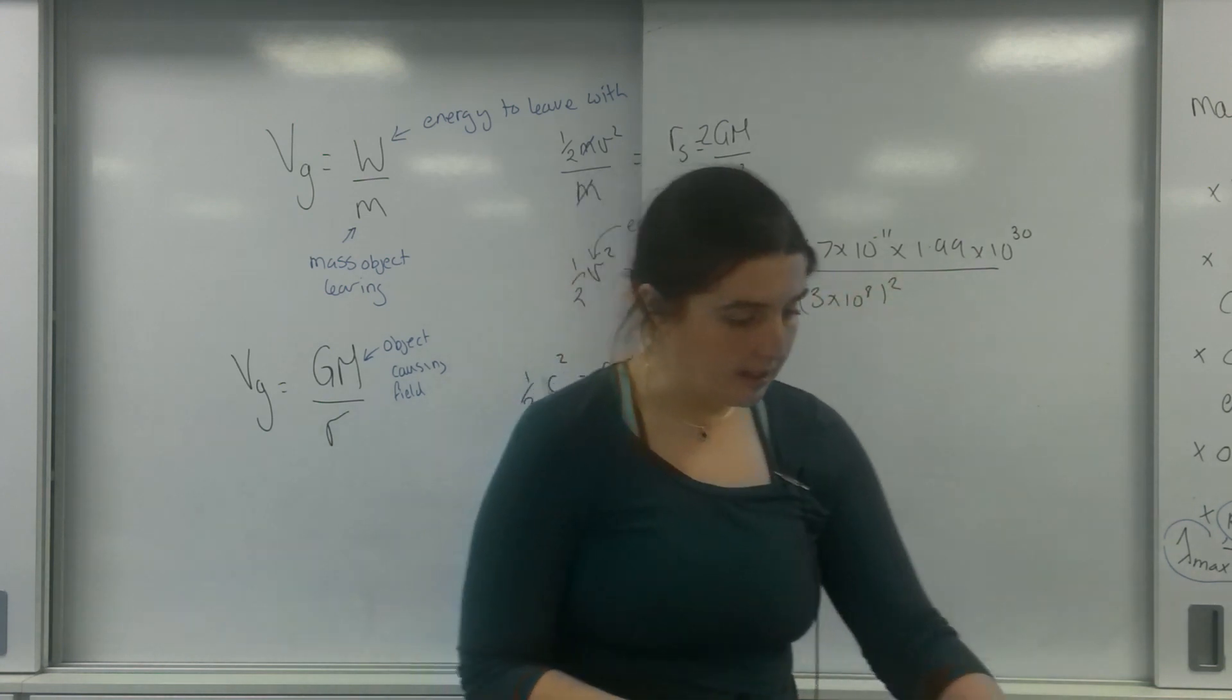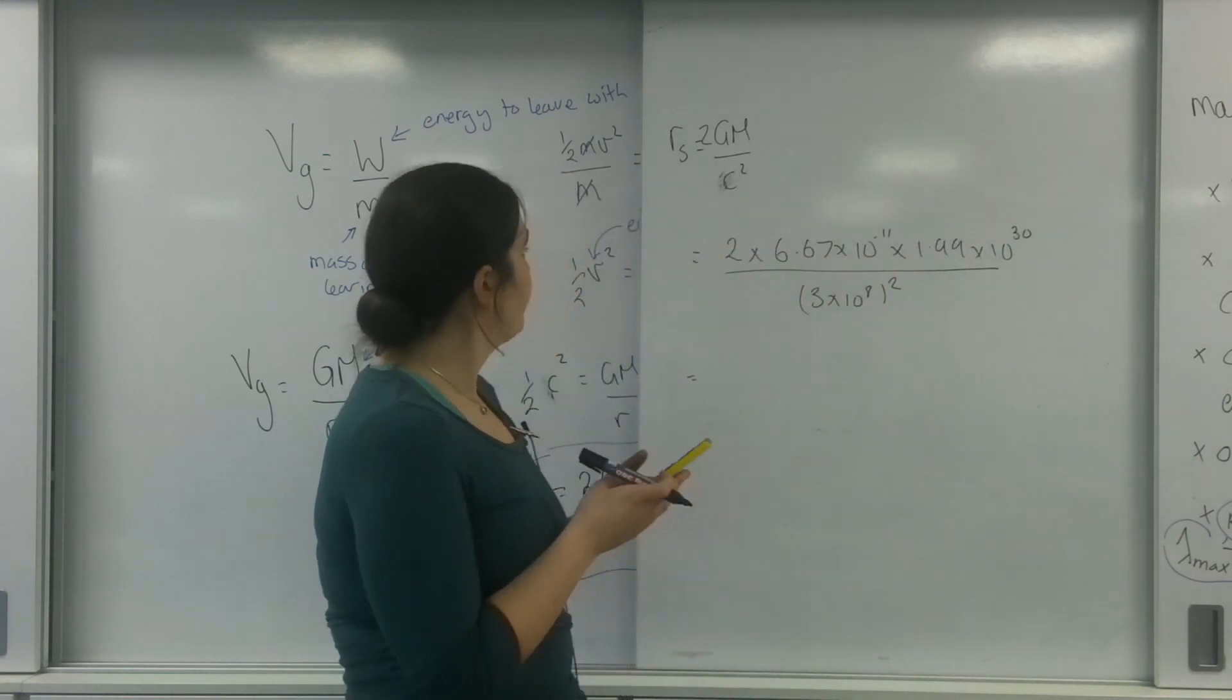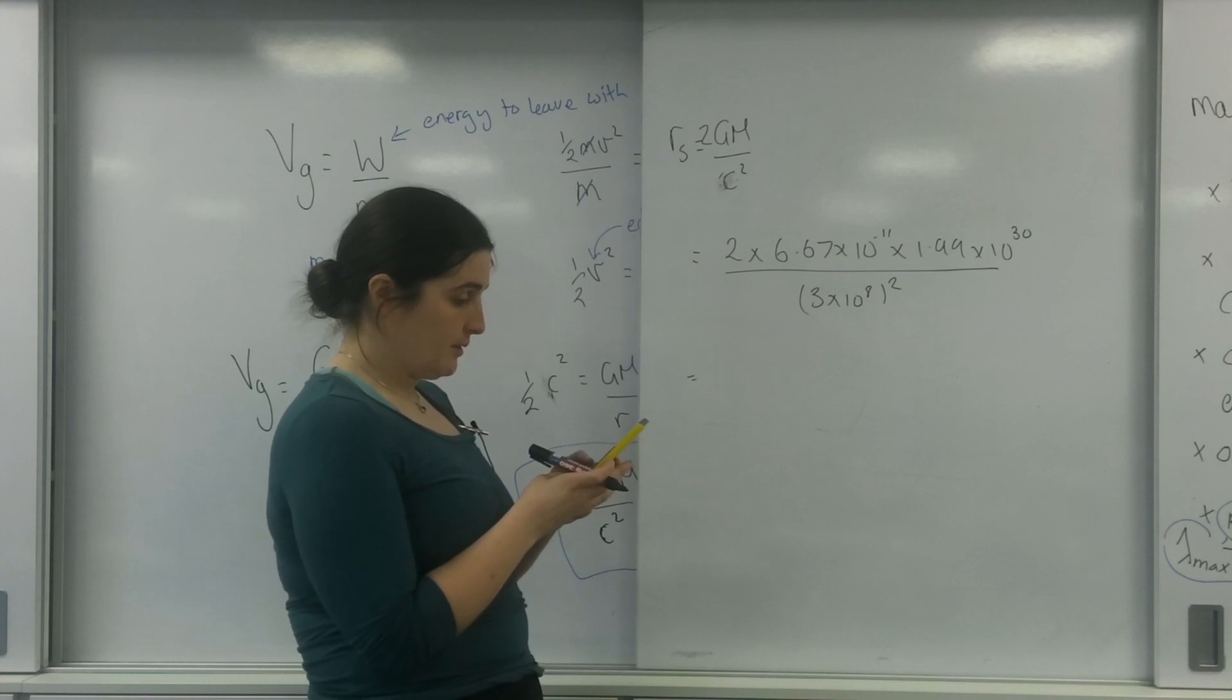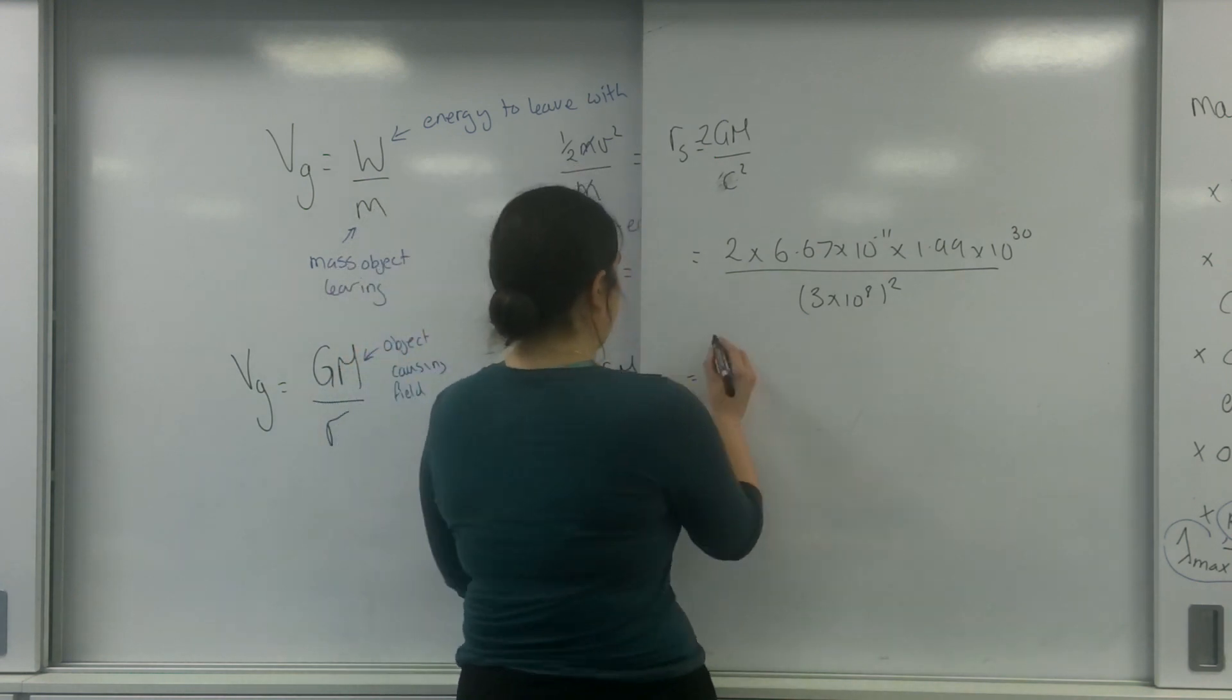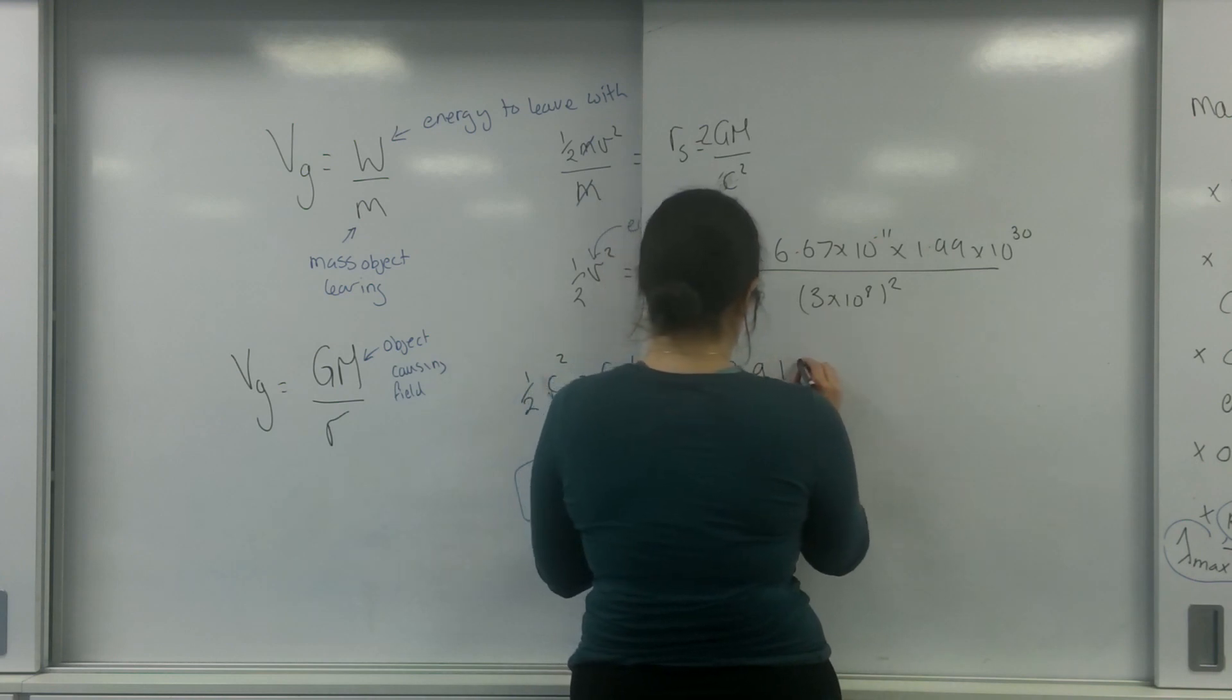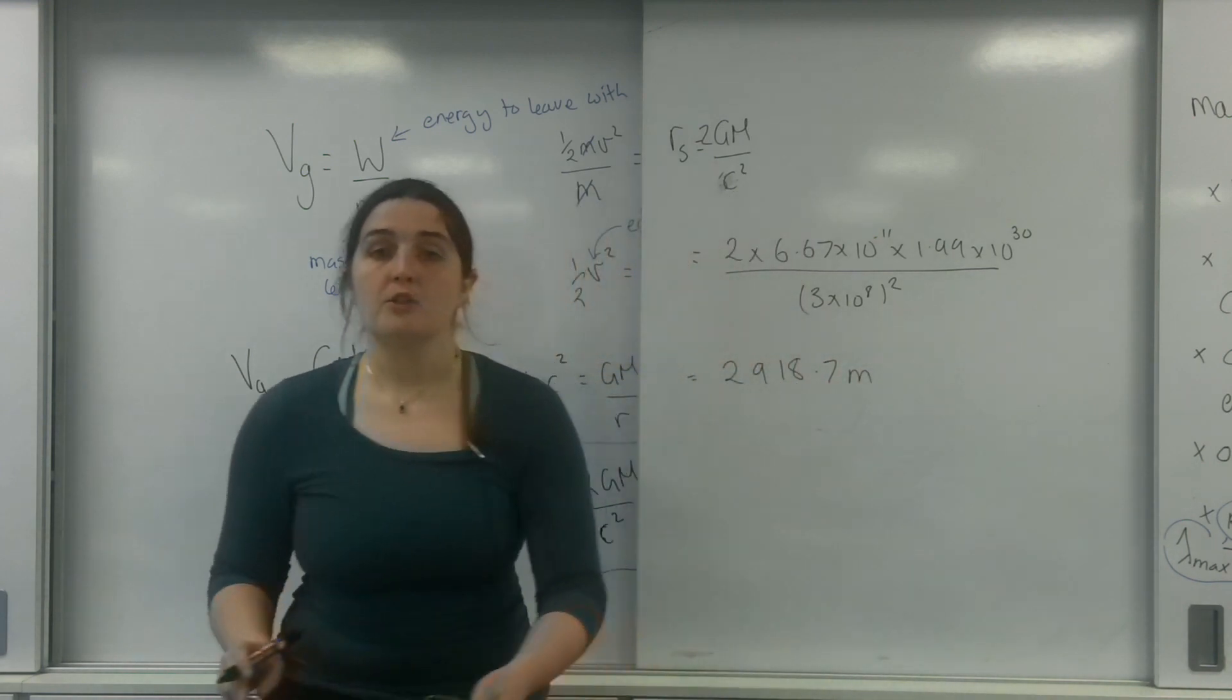So let's actually do this here, grab a calculator. So 2 times 6.67 times 10 to the minus 11, times by 1.99 times 10 to the 30, divided by 3 times 10 to the 8 squared, is 2918.7 metres.